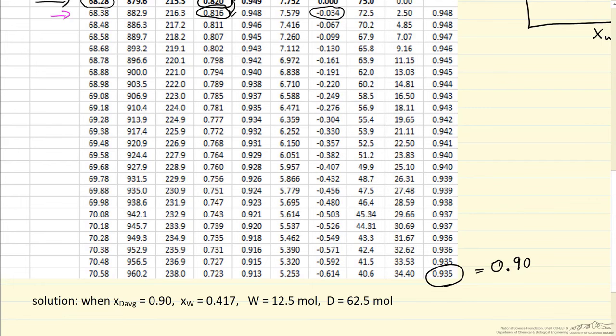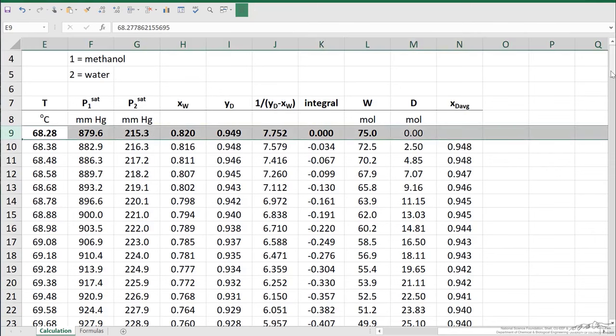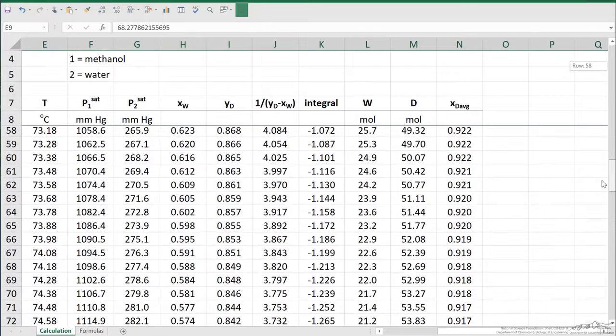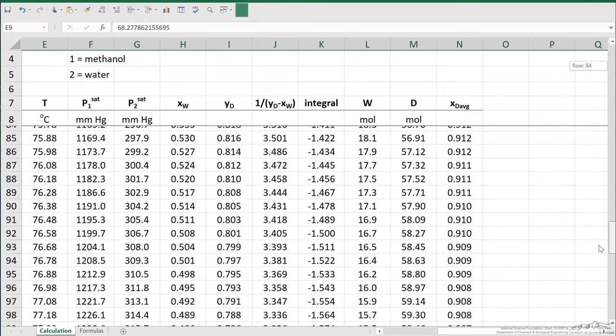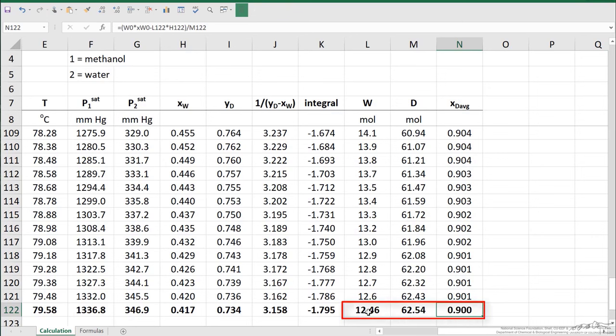Here's the spreadsheet. You've seen the first part. As I scroll down, we see x_d average is decreasing in the right-hand column. I carried out this integration until we got to 0.90, which is what the problem asked—how much was left when the distillate was at 0.90. You can see we have 12.46 moles left in the still, and we've distilled over 62.54 moles.